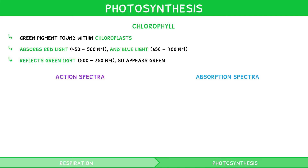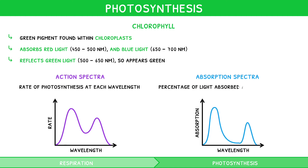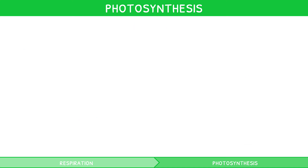The absorbance of chlorophyll can be quantified using two different types of graphs: action spectra and absorption spectra. Action spectra show the rate of photosynthesis at each wavelength of light. Absorption spectra show the percentage of light absorbed at each wavelength of light. These two graphs mirror one another, and it can be seen clearly that absorption and rate of photosynthesis vary at different wavelengths. Therefore, colour of light is a key factor affecting the rate of photosynthesis. The IB syllabus also focuses on three more important factors: temperature, light intensity, and carbon dioxide concentration.